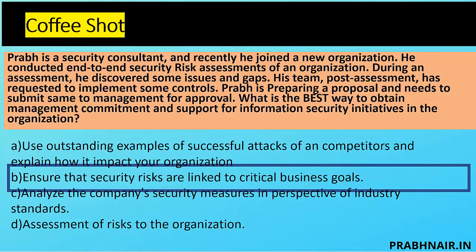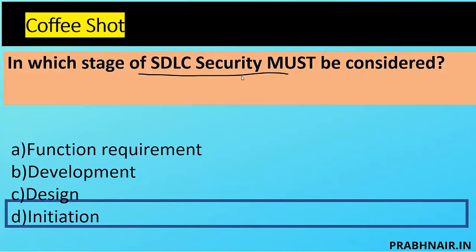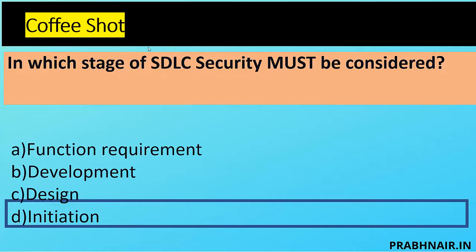Question nine: in which stage of the SDLC must security be considered? Security should be present in every phase. Option A — functional requirements — misses the initiation phase. Option B — development — is too late; going back to get customer agreement on functional requirements is costly. The best practice is to introduce security as early as possible — starting from phase one (initiation). The answer is D. Note: if the question asks about security in functional requirements specifically, the answer would be A; for test cases, it would be development.